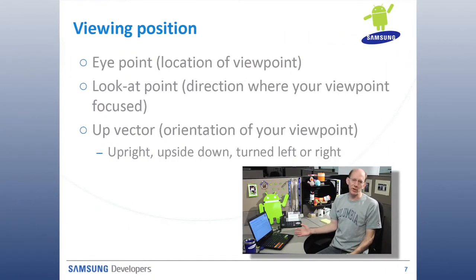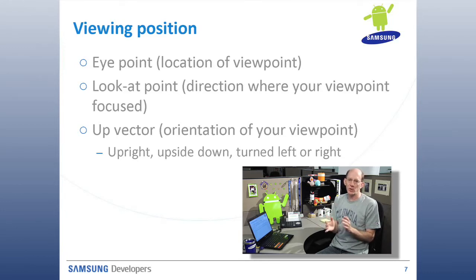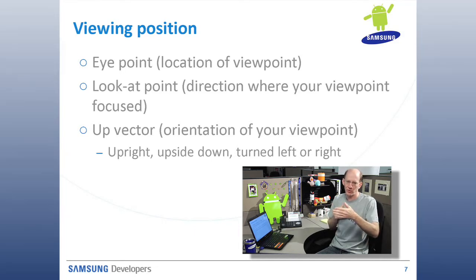So we've defined our scene and figured out how to represent our objects by reducing them into a set of triangles. Now the next most important thing is to define your viewing position — the viewing position of the observer looking into the scene. We have a few key things: we have the eye point, which is the eye point of the observer looking into the scene. You have the look-at point — right now I'm facing into the camera, and my look-at point is on top of the camera. That's the direction I'm looking from my eye position. And then we have the up vector.